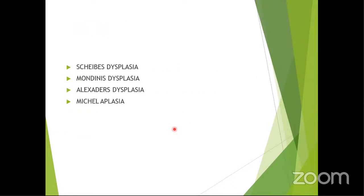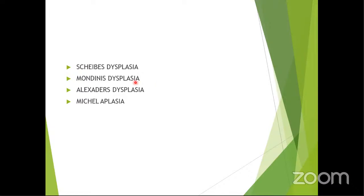There are certain anomalies or dysplasias that can occur in the inner ear, more important from an MCQ standpoint. There is Scheibe's dysplasia, Mondini's dysplasia, Alexander's dysplasia, and Michel's aplasia. Scheibe's involves the cochlea and saccular part. Mondini's has 1.5 turns of the cochlea instead of the normal 2.5 to 2.75. Alexander's affects the basal turn, causing high-frequency hearing loss. Michel's aplasia involves complete non-development of the inner ear.